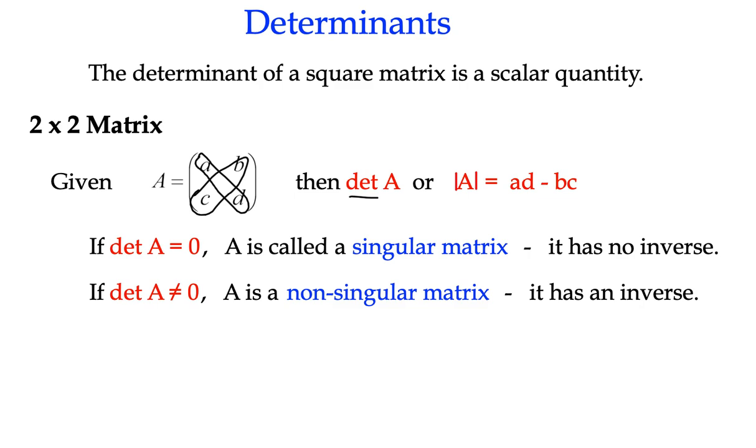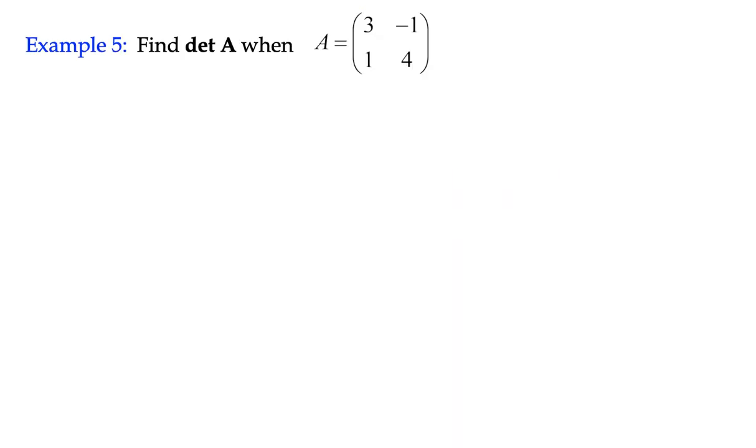So that's how we calculate the determinant in a 2 by 2 matrix. So on a practical level, then example 5, find the determinant of A when A is 3, negative 1, 1, 4.